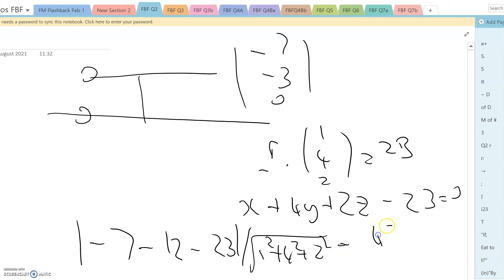And that comes to 42 over root 21, or 2 root 21.